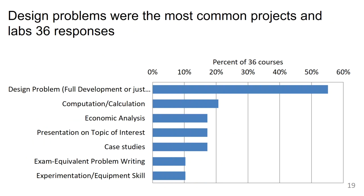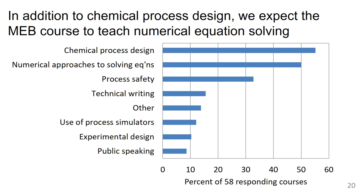We asked for some details about projects and labs, based on 36 responses. Only a smaller portion of courses actually have a project or a lab, but of those, activities range from a full development of the problem to just doing some calculations. For professional skills, what do we expect the material and energy balance course to teach in addition to material and energy balances? Formal problem solving strategies is a very common response, as well as numerical approaches to solving equations.